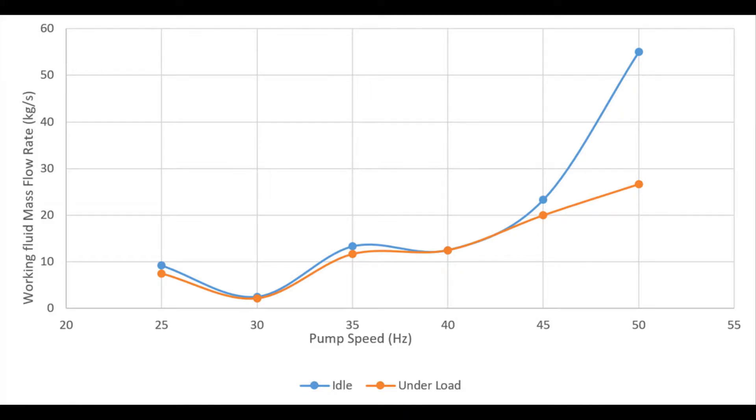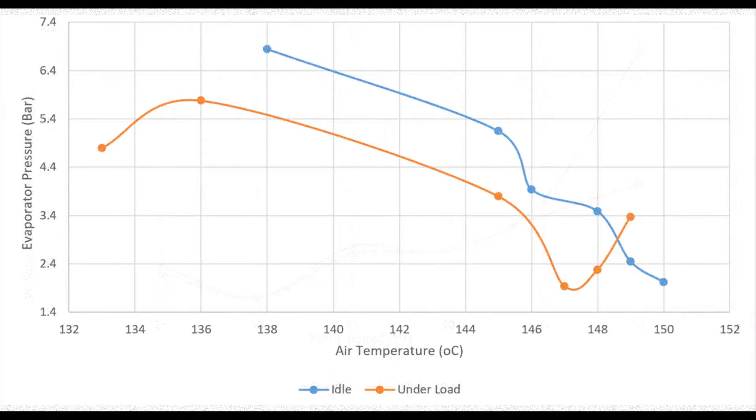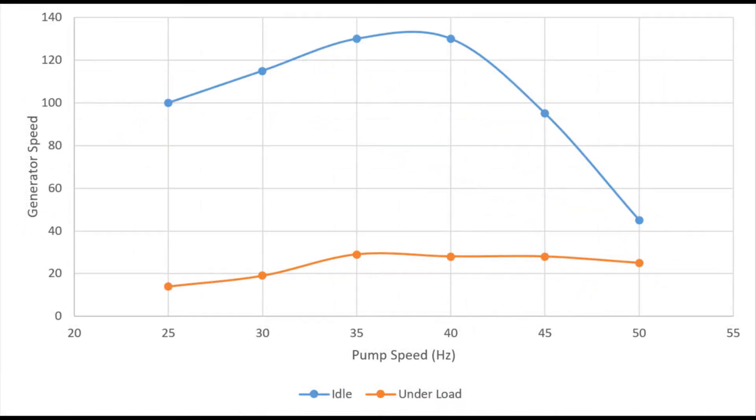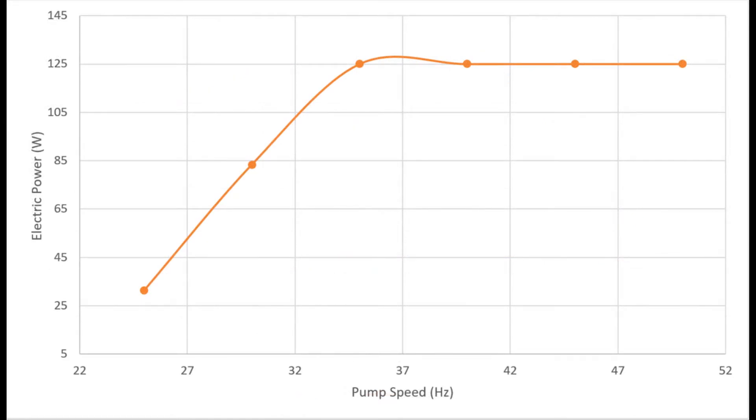This figure shows how the working fluid mass flow rate changes with pump speed changes. This is how the pressure at the outlet of the evaporator at idle and under load depends on air temperature. This is the dependence of the generator speed at idle and under load on pump speed. And the last one is the dependence of electric power under load on the pump speed.